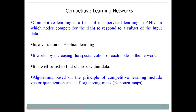Similar to that, there is a competitive learning network. It is a form of unsupervised learning in which the output nodes compete with each other in order to get activated or selected. Competitive learning is one variation of Hebbian learning. In Hebbian learning, multiple nodes can be activated at the same time, but in competitive learning only one output node gets activated at a time.